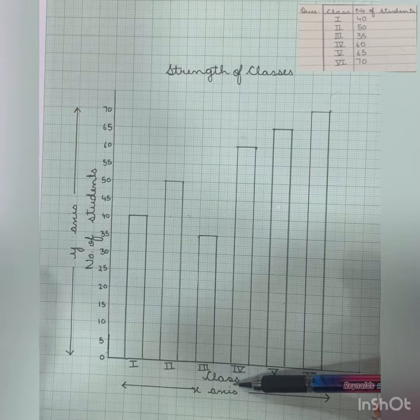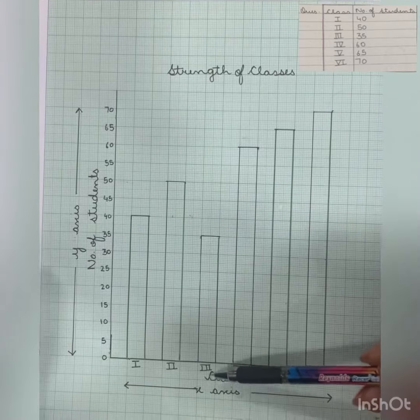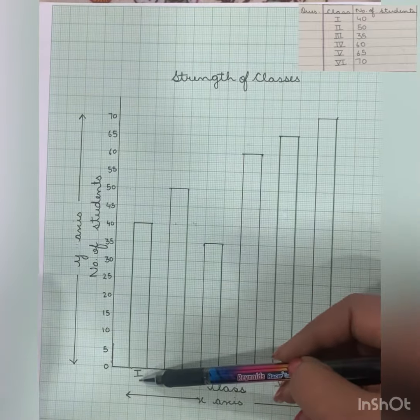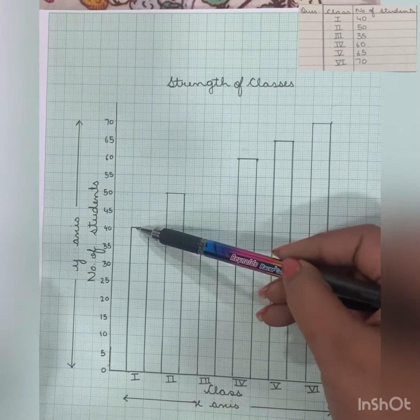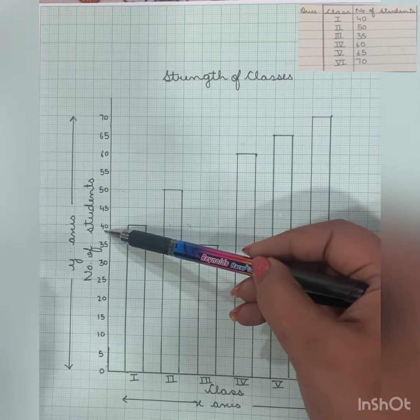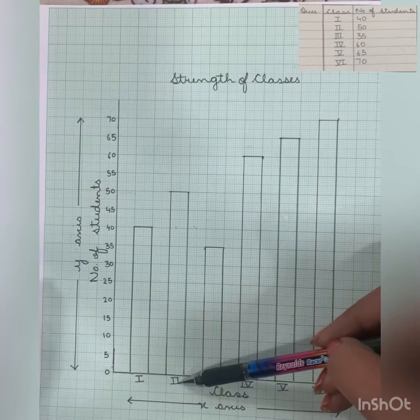For example, I want to see how many students are there in class 1. So in class 1, we have the bar till here, so how many students are there? There are 40 students. Similarly, in class 2...